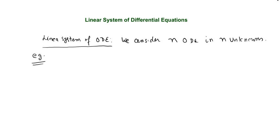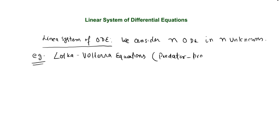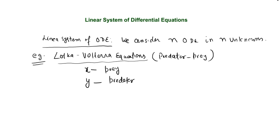The first example shows where these equations originate — they describe physical or biological processes. I am taking a 2 by 2 system known as the Lotka-Volterra equation, also known as the predator-prey model. We have 2 species: X is the population of prey, or food, and Y is the population of predator. For example, predators are foxes and prey are rabbits.